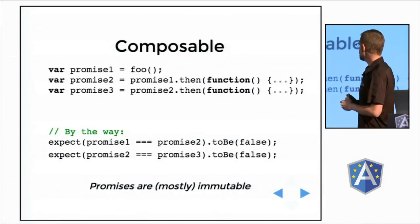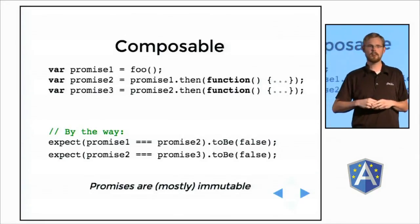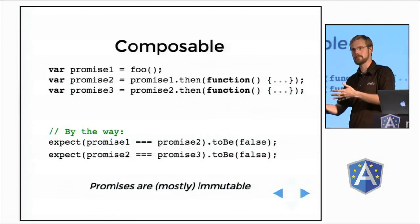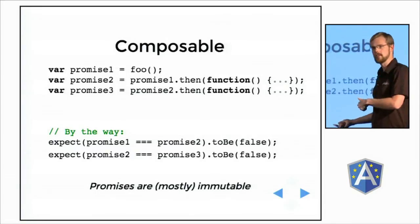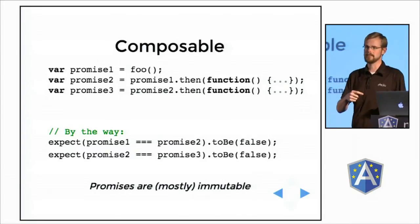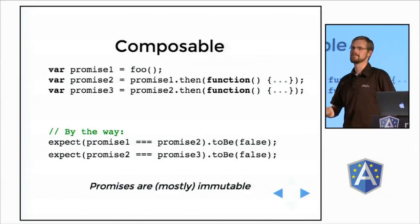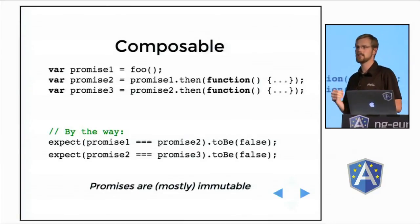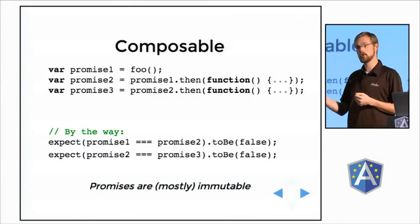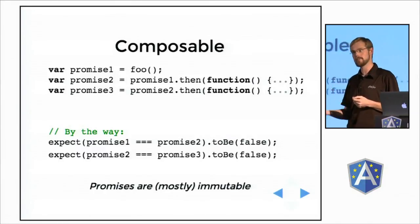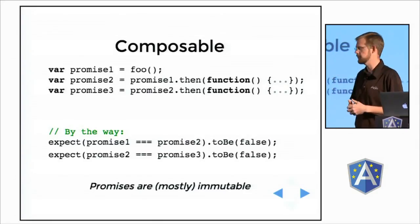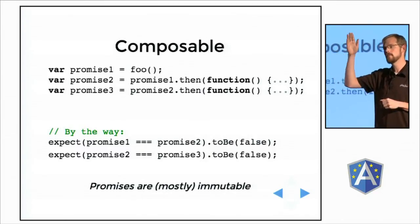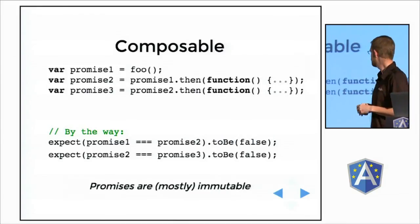Why are promises composable? Every time I have a promise, I can call .then on that promise and pass my function. You may not know this: that .then actually returns a new promise, and I can call .then on that promise. These promises are not equal to each other — they are not the same object. This is not like a jQuery function that returns back the same element for chaining. This is, in fact, a whole new promise. When I resolve the first deferred object that started this chain, all promises will be resolved in sequence.